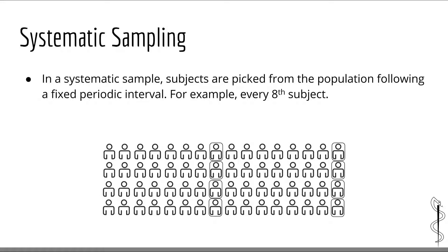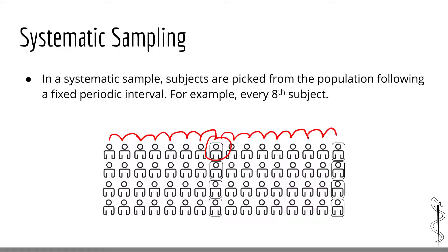The next type of sampling technique is called systematic sampling. In systematic sampling, individuals from the population are assigned an order and participants are selected based on a fixed periodic interval. For example, every eighth individual is picked.